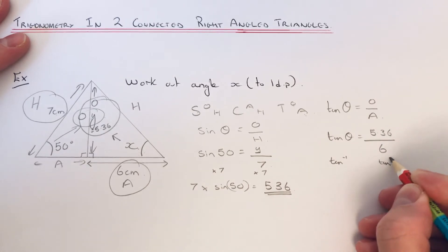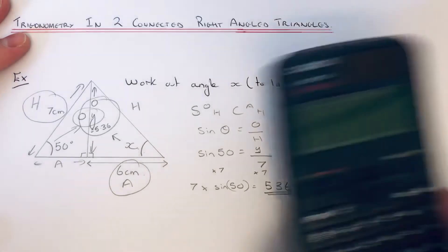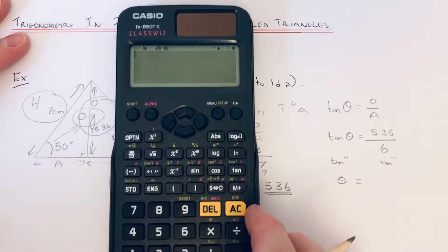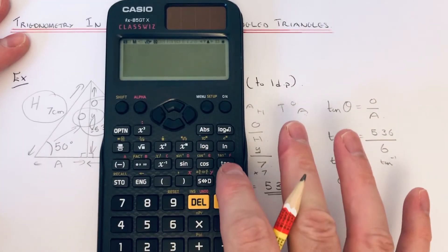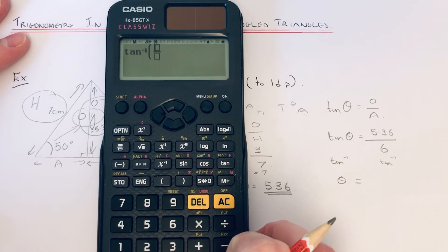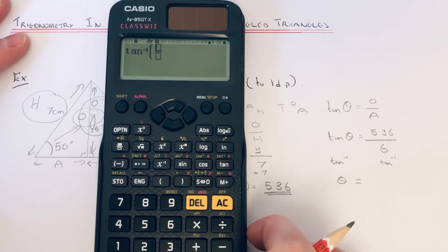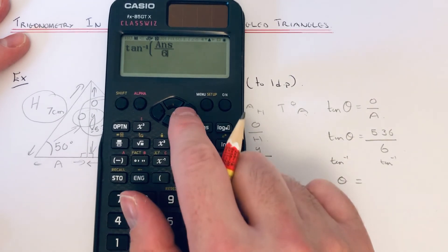If we just get our calculator, on our calculator we need to go shift, tan, fraction. If you remember, we stored the last answer in the calculator's memory, so if you just press ANS, that will be 5.36, and put the 6 on the bottom.